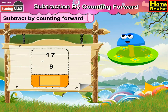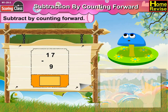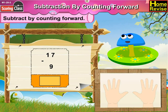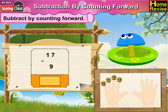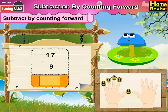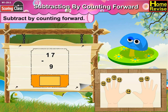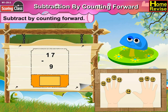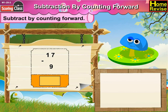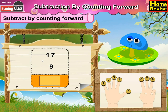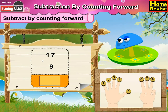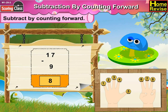17 minus 9 is equal to dash. Now by counting forward it would be 10, 11, 12, 13, 14, 15, 16, 17. That is 8 steps. So 17 minus 9 is equal to 8.